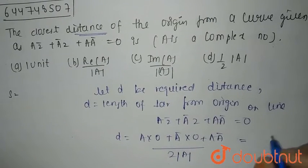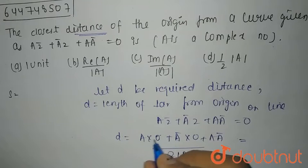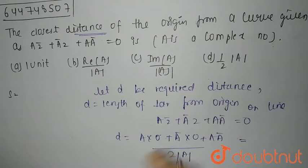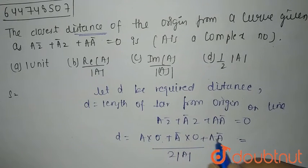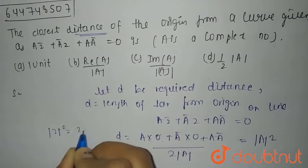You can say that this comes out to be a into 0 plus a bar into 0 is nothing 0 because this is 0 and this is 0. And this comes out to be a a bar which is nothing but a square by the property of z square can be written as z into z bar.